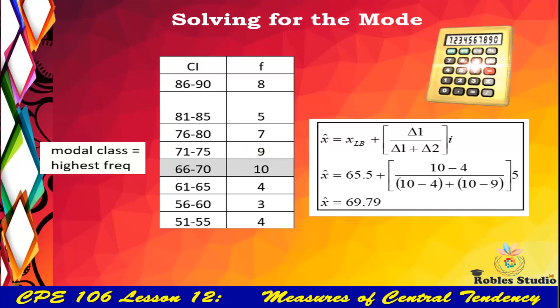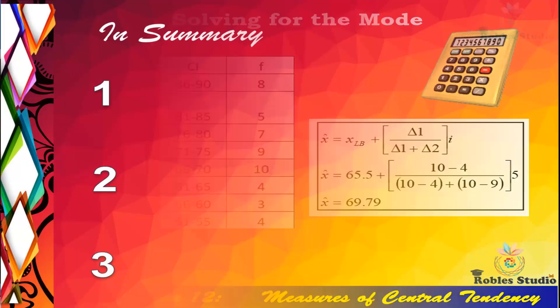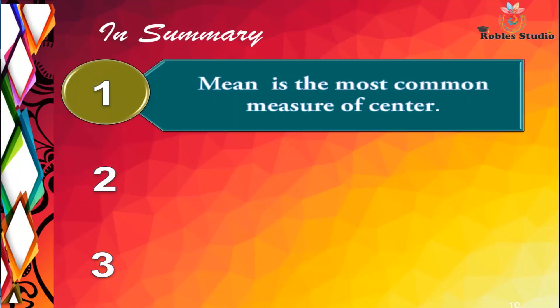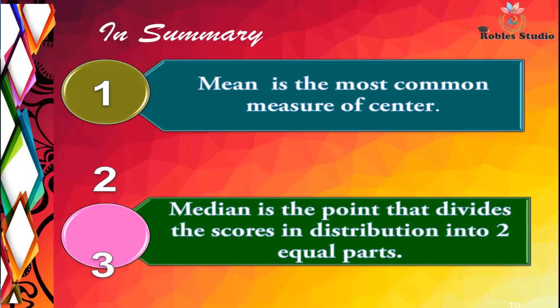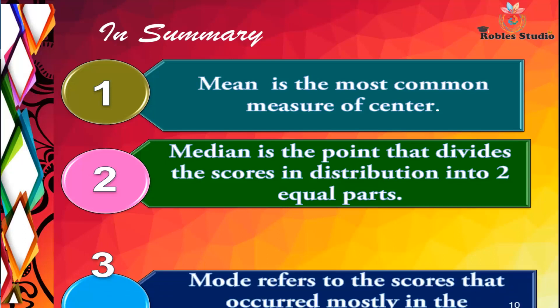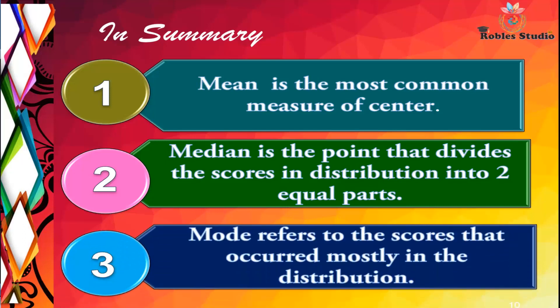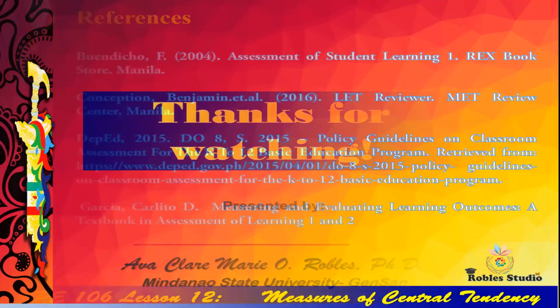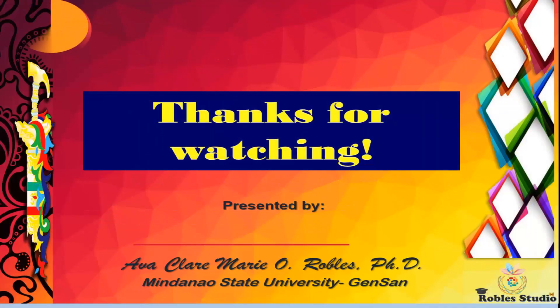In summary, we learned that the mean is the most common measure of central tendency, the median is the point that divides the scores in the distribution into two equal parts, and the mode refers to the scores that occurred most frequently in the distribution. Thank you very much for watching.